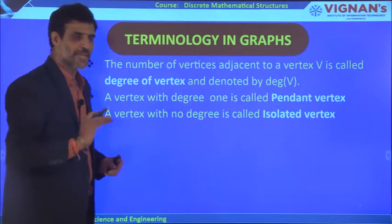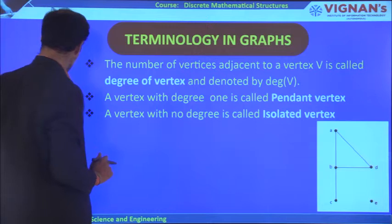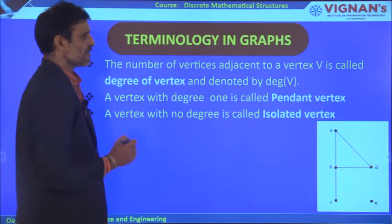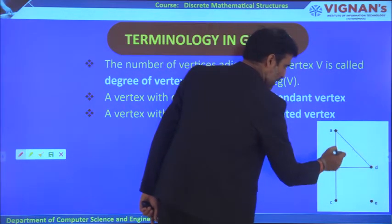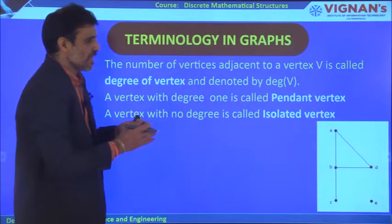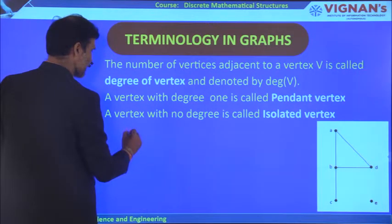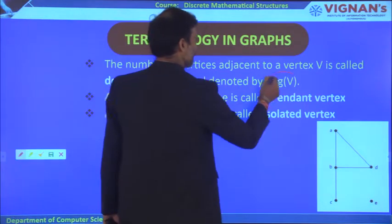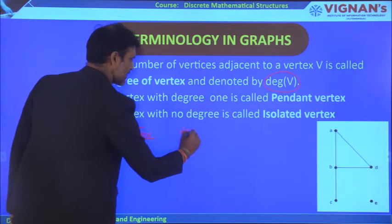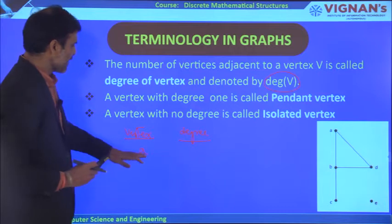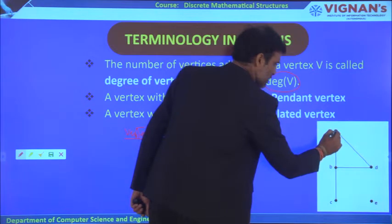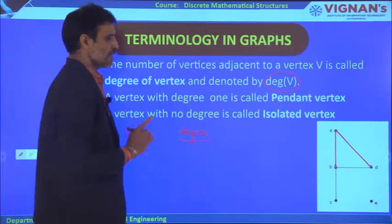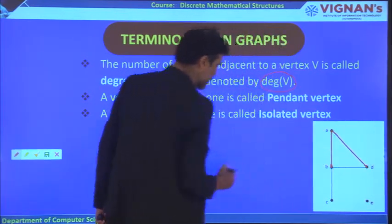Let us understand these definitions with an example. The degree is the number of edges adjacent to a particular vertex, denoted as degree of V. For vertex A, the adjacent vertices are B and D, so the degree of A is 2. For vertex B, the adjacent vertices are C, A, and D, so B has degree 3.